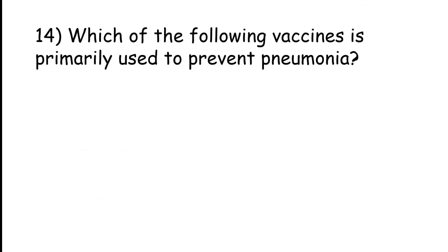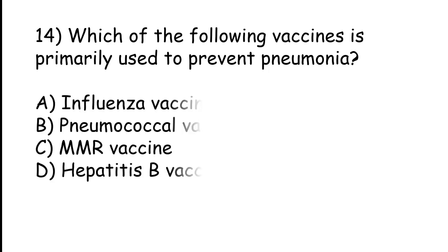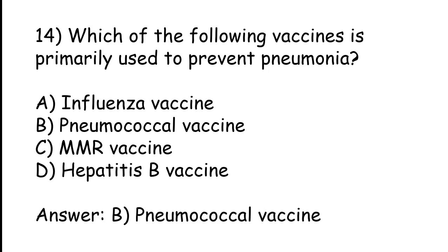Which of the following vaccines is primarily used to prevent pneumonia? Influenza vaccine, pneumococcal vaccine, MMR vaccine, hepatitis B vaccine. The correct answer is option B, Pneumococcal vaccine.